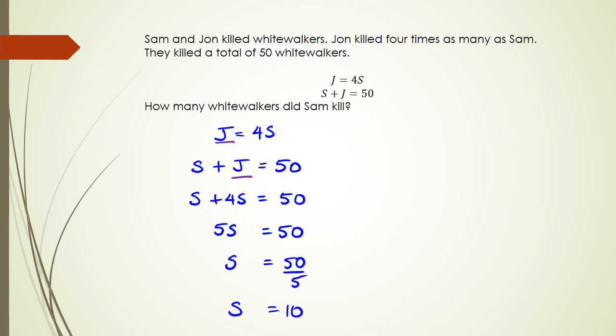So in this question we're not really looking for the other. We're not looking for what John did. Just looking at what Sam did and obviously in this question, Sam has killed 10 White Walkers. All right, basically guys that's about it for this session. If you have any questions, pop it in the comments below. But apart from that, thank you for watching.